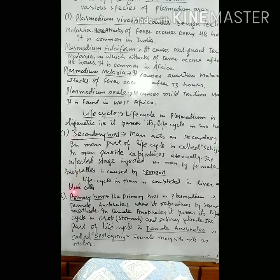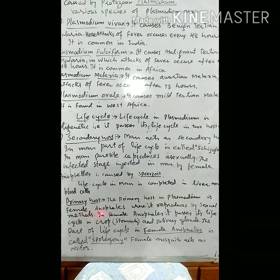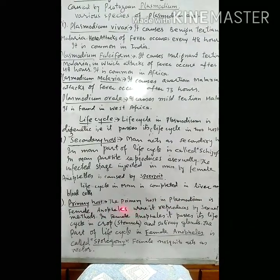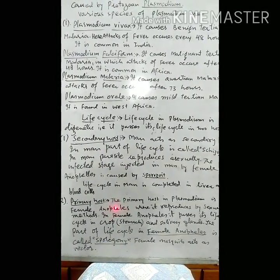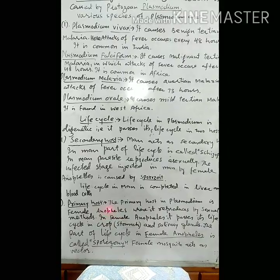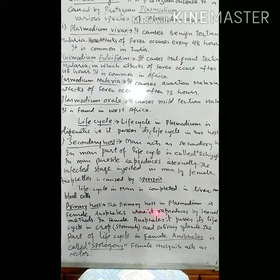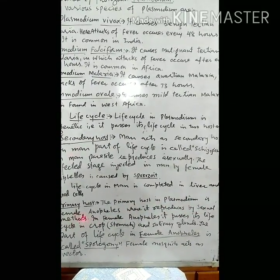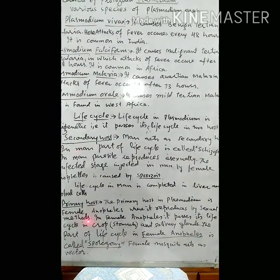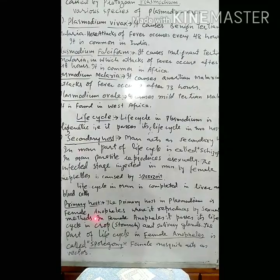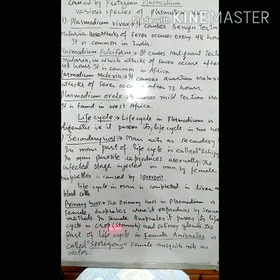The primary host of plasmodium is the female Anopheles mosquito. There are two types — male and female — but the female causes infection. The sexual phase occurs in the female mosquito, where the parasite reproduces by sexual methods.